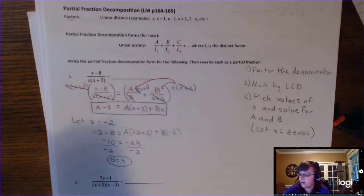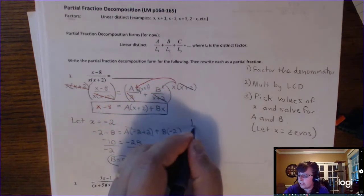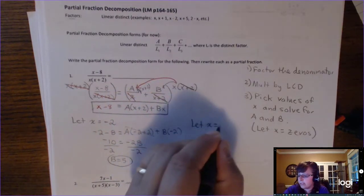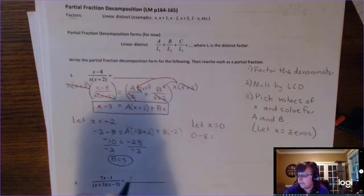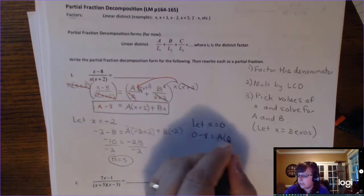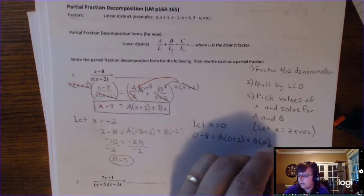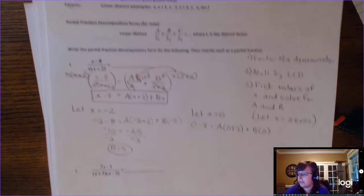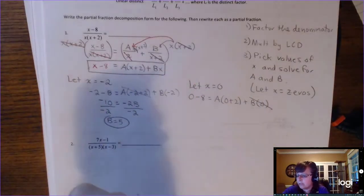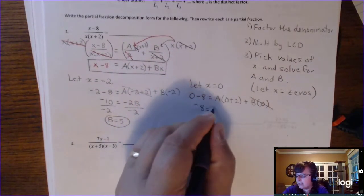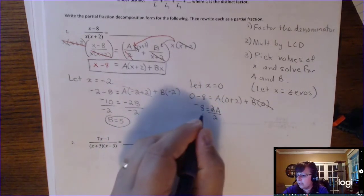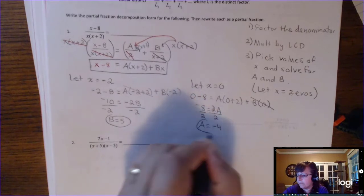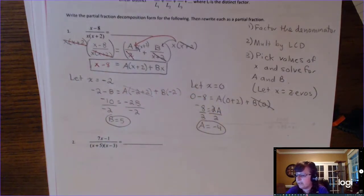Now I need to find A. The zero from the x factor is 0, so I'm going to let x equal 0. Looking at the boxed equation: 0 minus 8 on the left, and A times 0 plus 2, plus B times 0. Because I picked zero, the B term goes away. So negative 8 equals 2 times A. Dividing by 2, A equals negative 4.